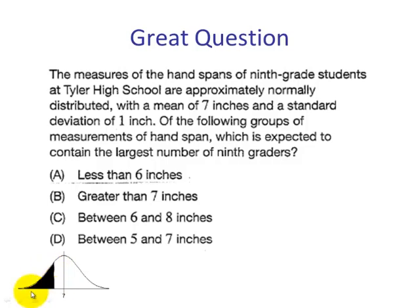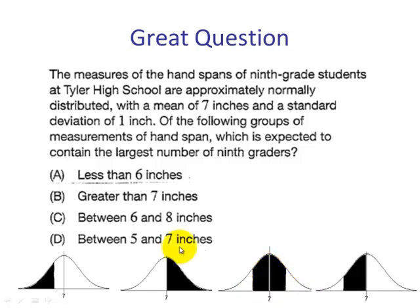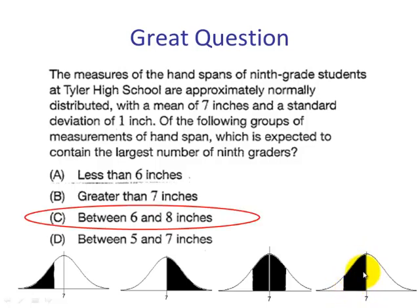Option A would be less than 6 — this is less than half the distribution. Option B would be greater than the mean — this equals 0.5. Option C is between 6 and 8, that's one standard deviation below and one above, so by the empirical rule this is 68%. Option D is between 5 and 7, which gives an area less than 0.5. So C is the correct answer — it has the largest area at 68%.